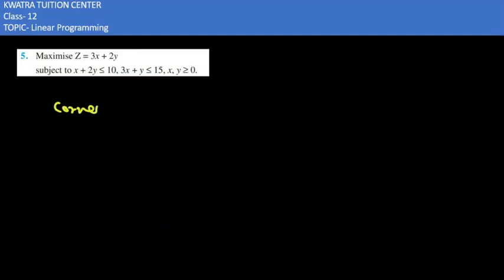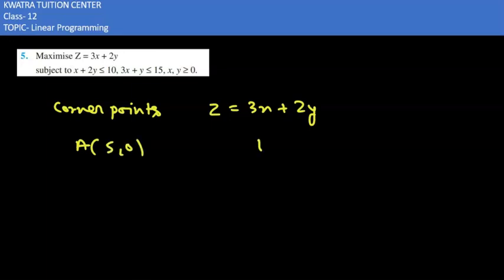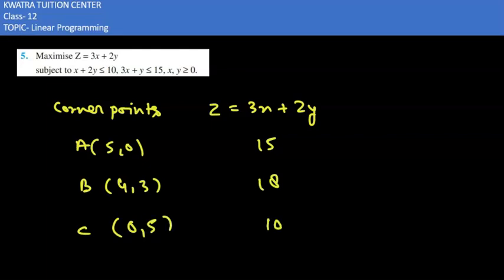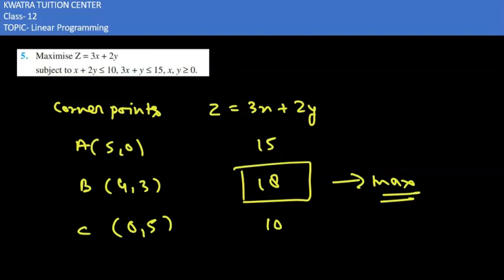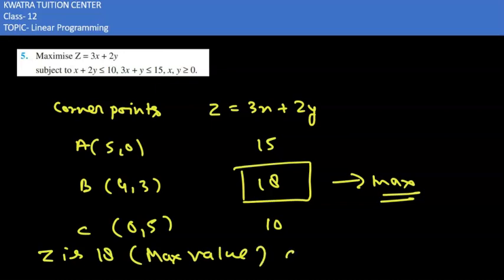If we tabulate this data with coordinate points and z = 3x + 2y: at A (5, 0), z = 15; at B (4, 3), z = 18; at C (0, 5), z = 10. We can see the maximum value is z = 18, achieved at point B (4, 3). This is our required solution.